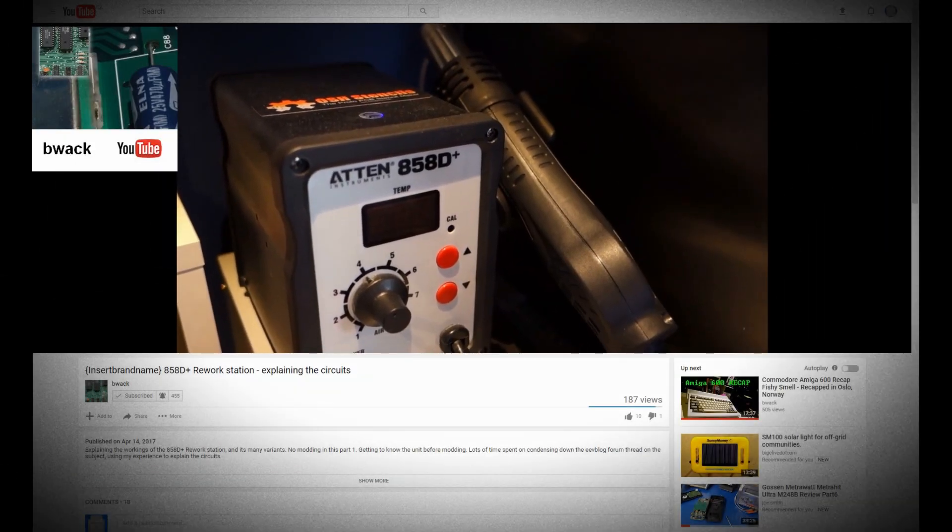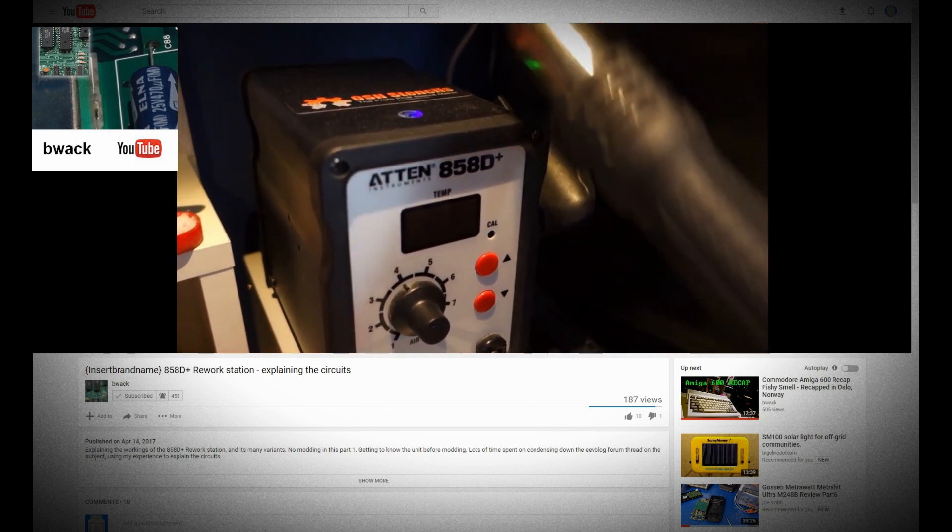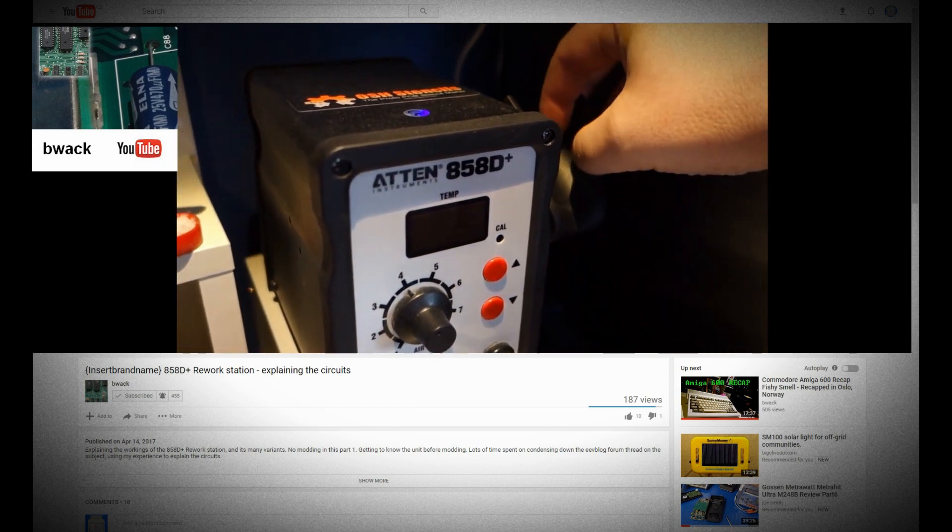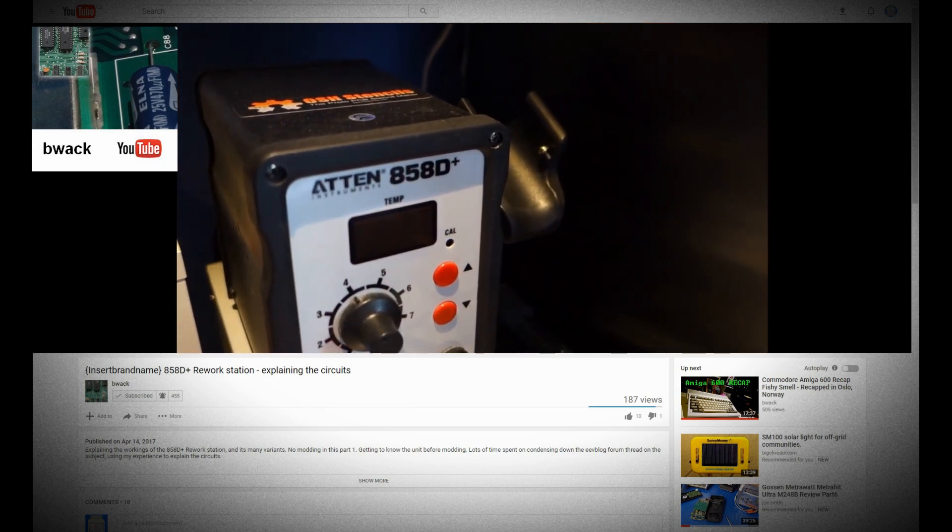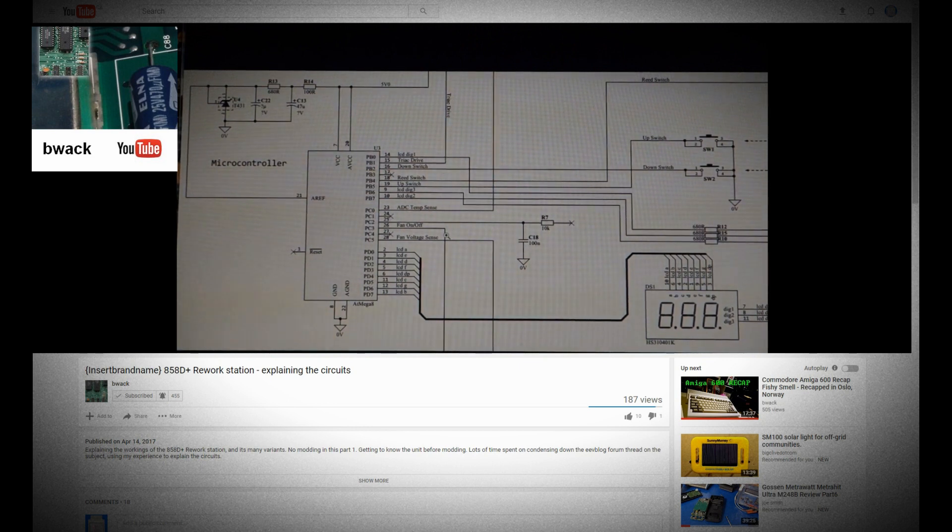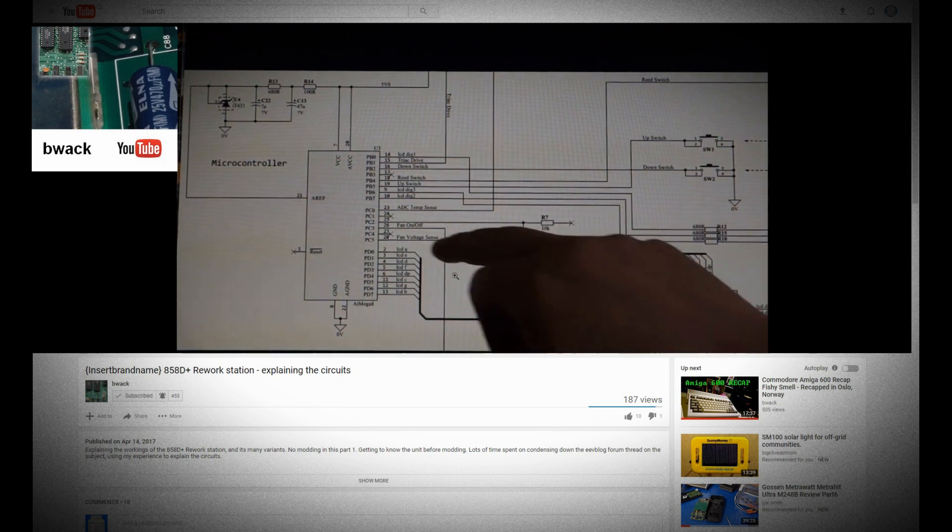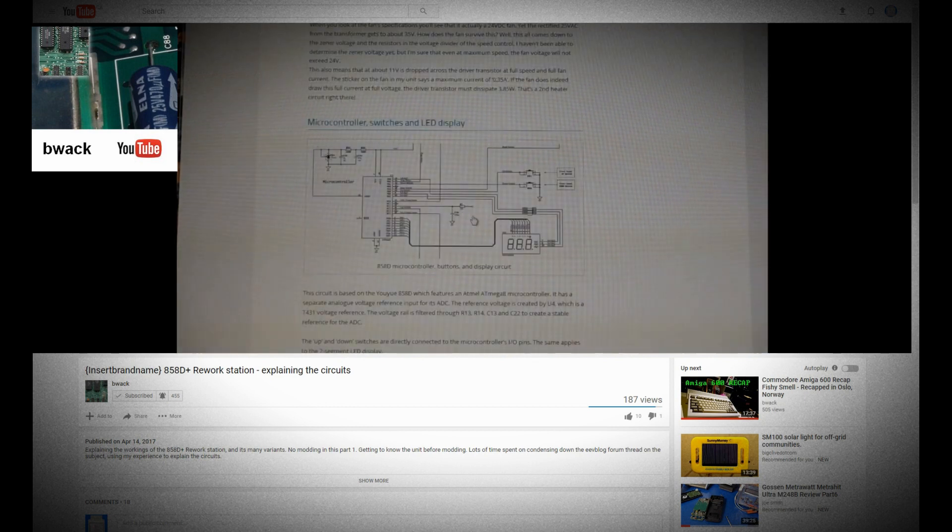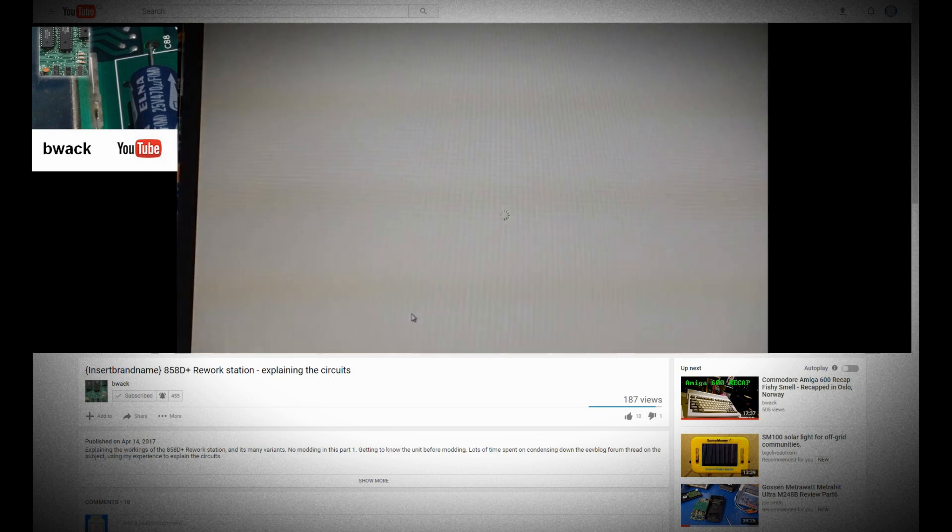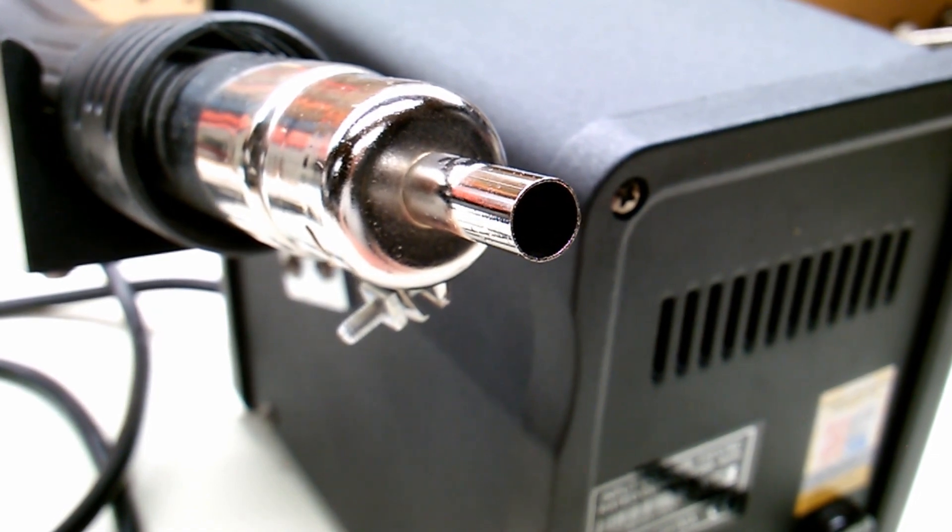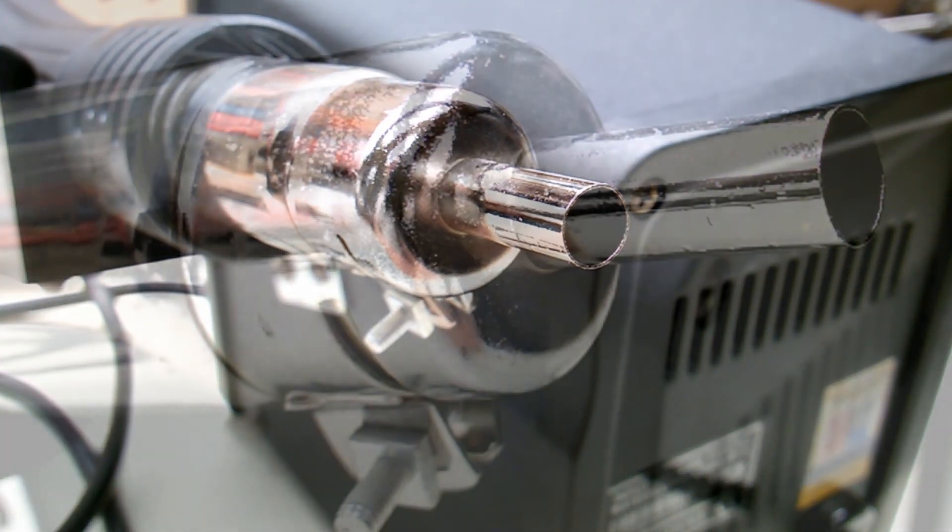Now, if you're into Commodore 64 repair and mods and related electronics, then you're likely a subscriber to BWAC's YouTube channel. And if you're not, I highly recommend it. I will link it below. About a month ago, BWAC started a really interesting series with his 858D Plus rework station, where he continues the work of Mad Worm on EEV blog forum. BWAC does a thorough job explaining Mad Worm's reverse engineering of the entire 858D Plus circuit design. Now, in the course of me commenting on those videos, BWAC mentioned to me, make sure that the tip of your 858D is actually grounded properly.